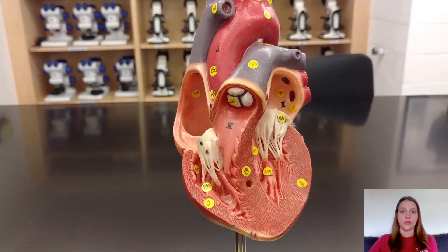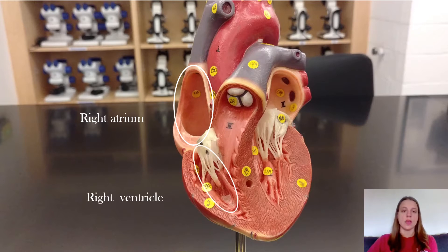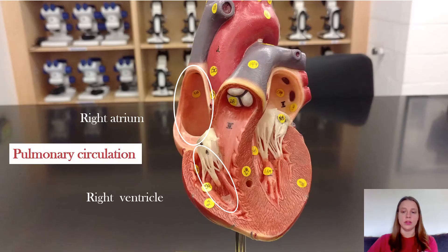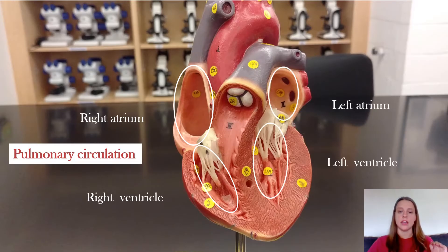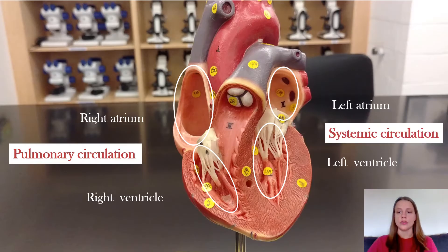The heart has four chambers. On the right side there's the right atrium and the right ventricle, and those pump the blood through pulmonary circulation, which brings the blood out to your lungs to get oxygen and then back to the heart. Then you have your left atrium and left ventricle, which pump the blood through systemic circulation — the circulation that goes out to all of your body tissues to deliver oxygen and then returns to the heart deoxygenated.